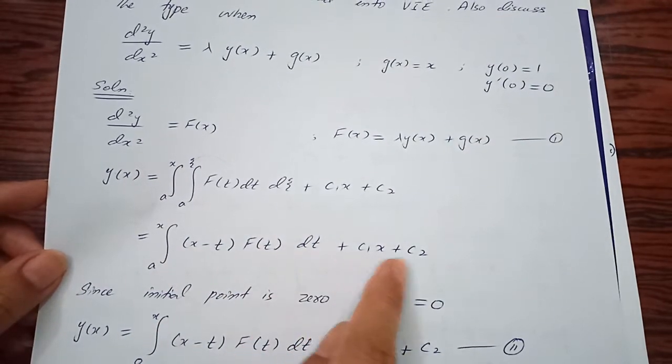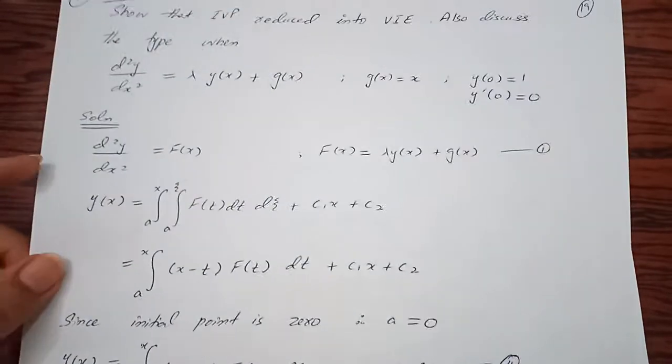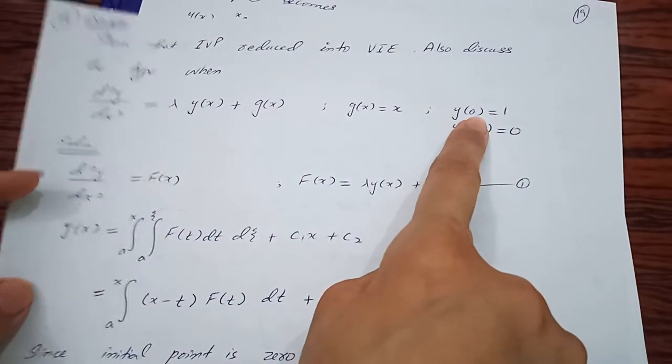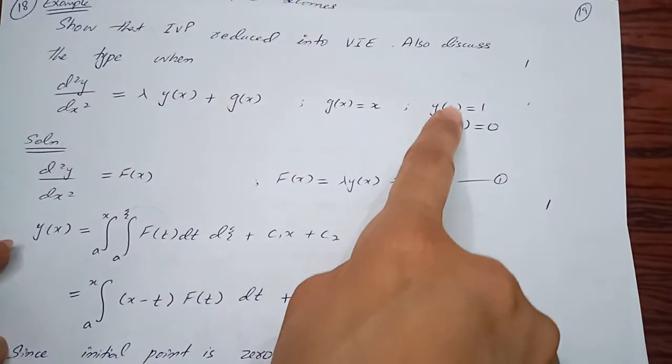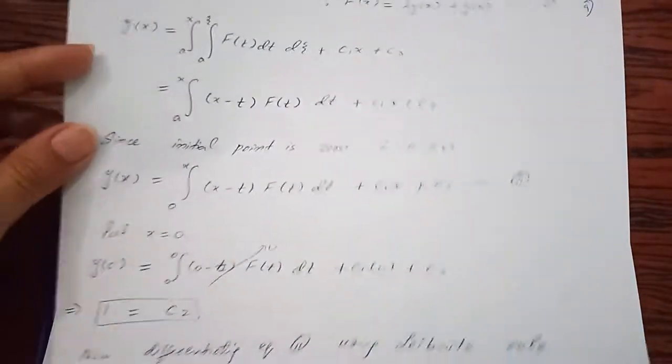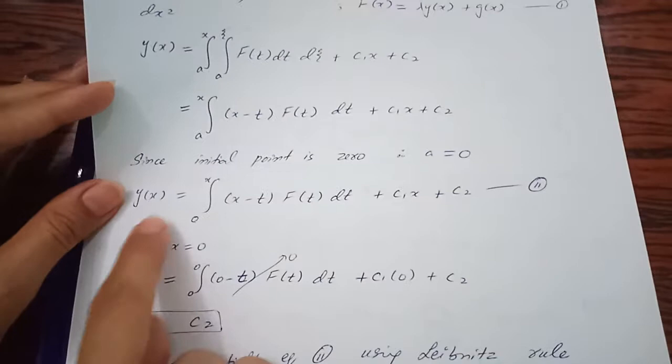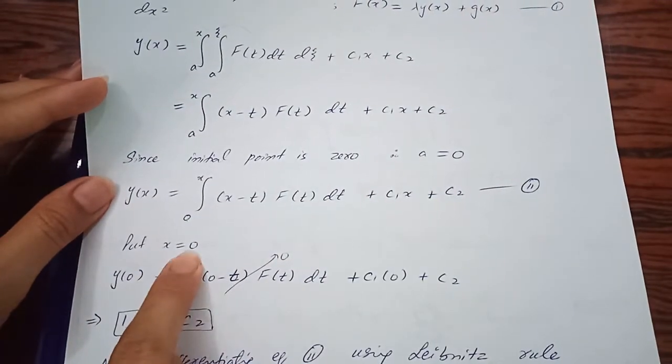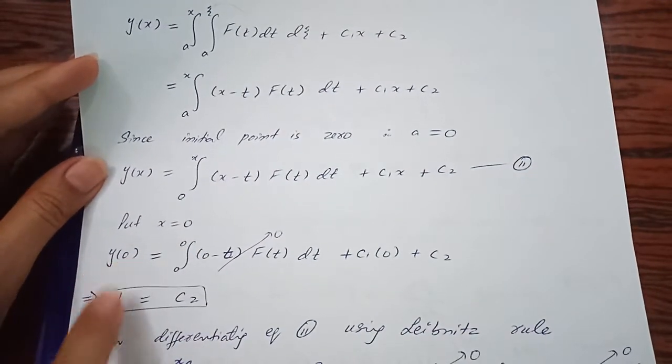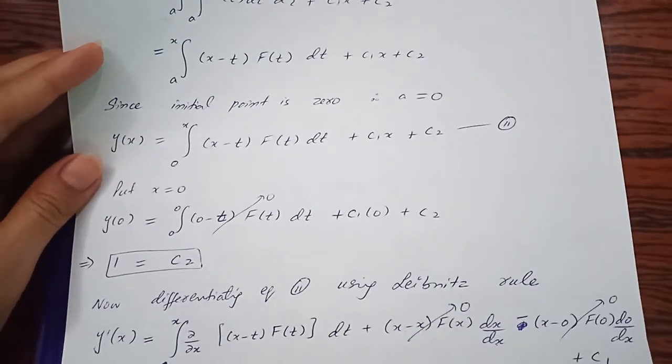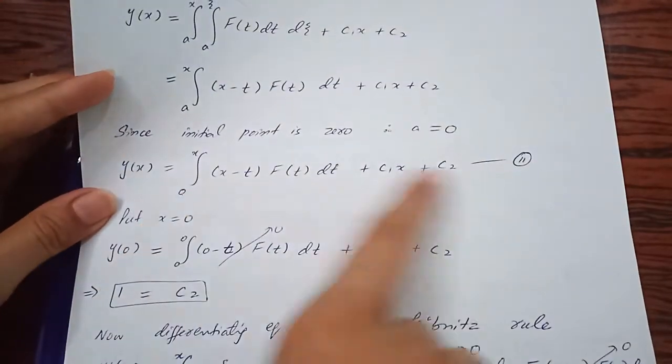Since the initial point was 0, put x = 0 and y = 1. Wherever you have x, replace it with 0, and replace y(0) as 1. You will get the constant c₂ = 1.